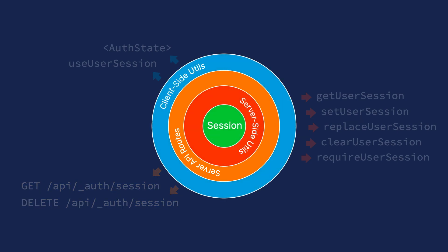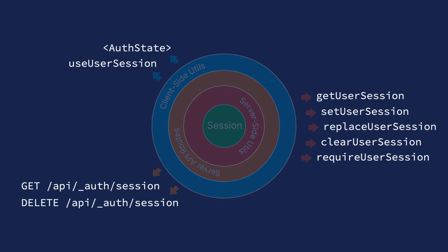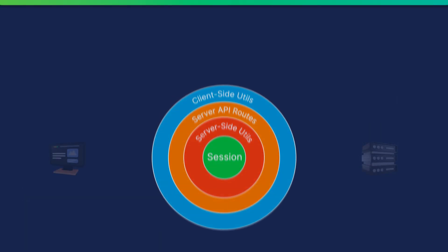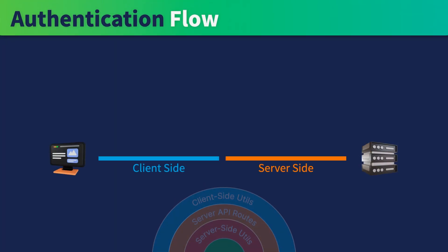Since Nuxt Auth Utils is still under active development, you might find its future API different from what we're showing here. But it's important to understand that all of these utilities are just layers of abstraction around the session — they exist to help us implement an authentication flow. The authentication flow will need some new API routes for signup, login, and logout.